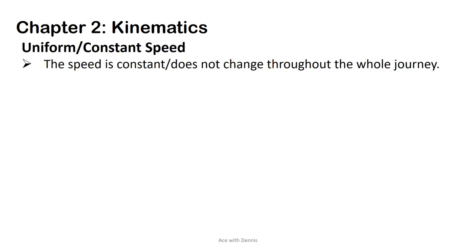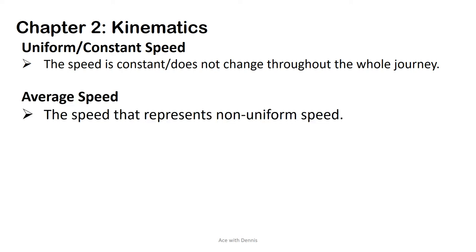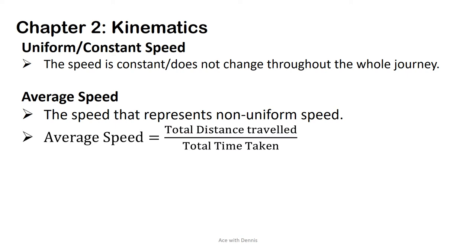Uniform speed or constant speed: The speed is constant, which means it does not change throughout the whole journey. Average speed: Average speed is the speed that represents non-uniform speed. The formula of average speed is total distance traveled over total time taken.